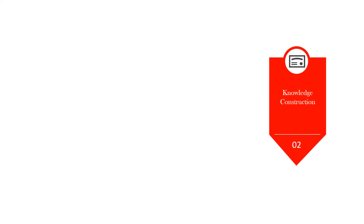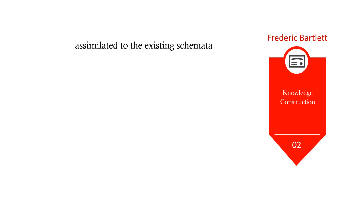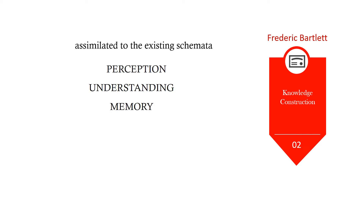The second one is knowledge construction. This is popularized by Frederick Bartlett. He claimed that learning becomes meaningful if it is assimilated to the existing schemata. According to him, our perception, understanding, and memory influence our mental construction.